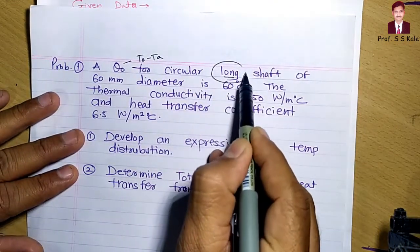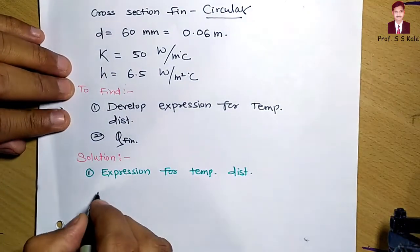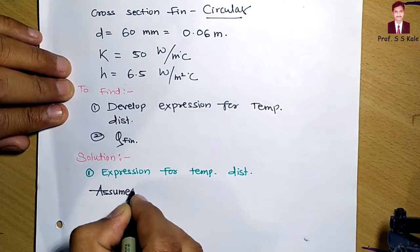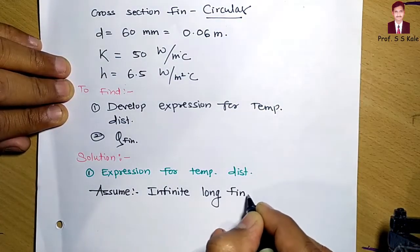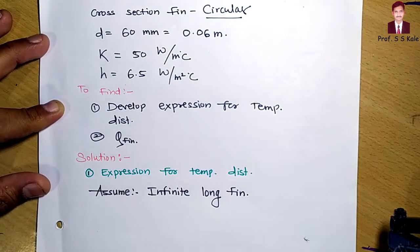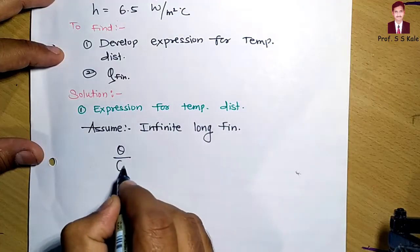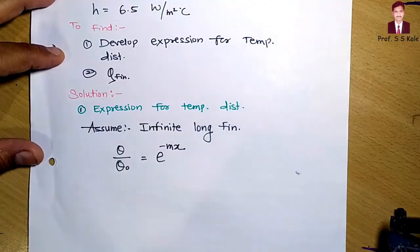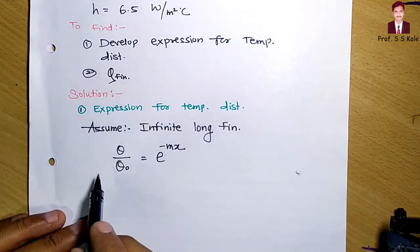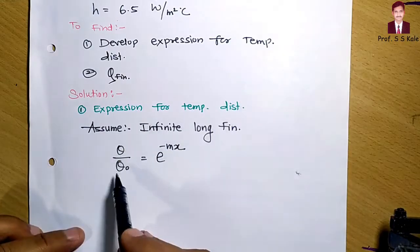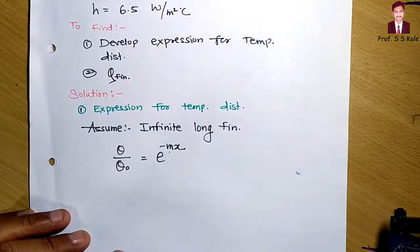The problem mentions 'long shaft,' so this is an infinite long fin case. The temperature distribution equation for an infinite long fin is: theta divided by theta_0 equals e raised to minus mx. To develop the full expression, we need to determine m, and substitute the known values of theta and theta_0.